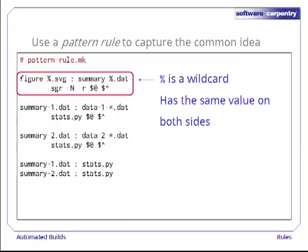Percentage only means something to MAKE, though. It doesn't have a value in the rule's action, which is handed off to the shell for execution. So in the action, we have to use the automatic variables $@ and $^ as before.